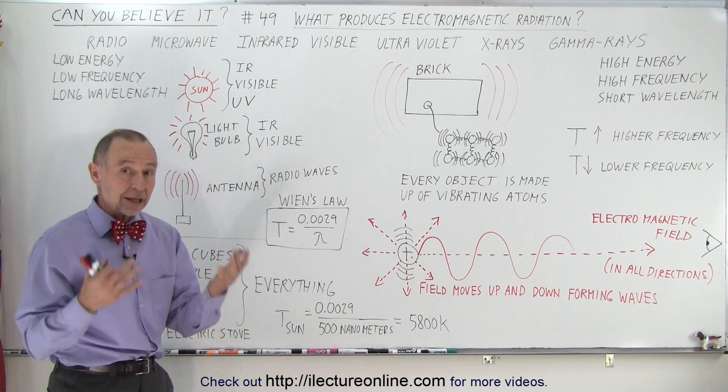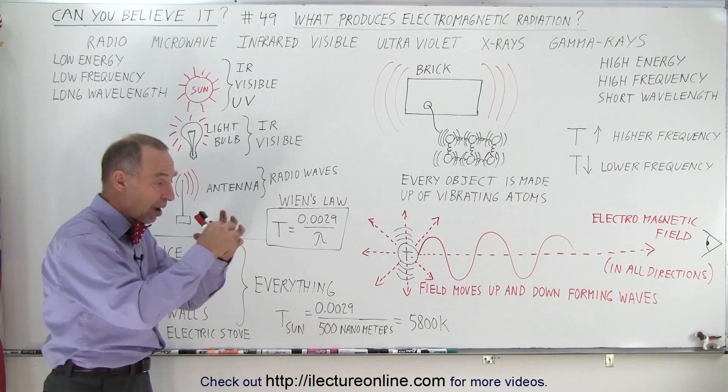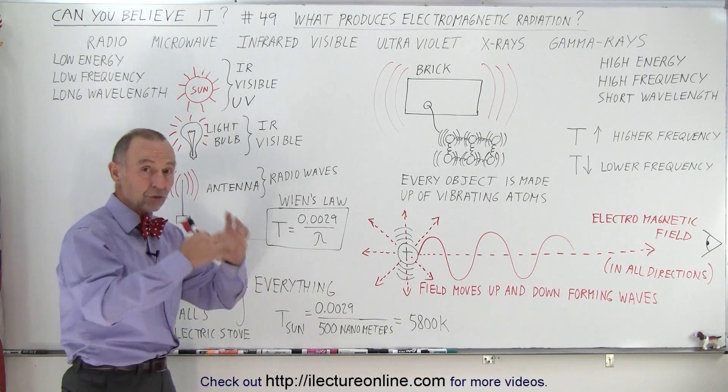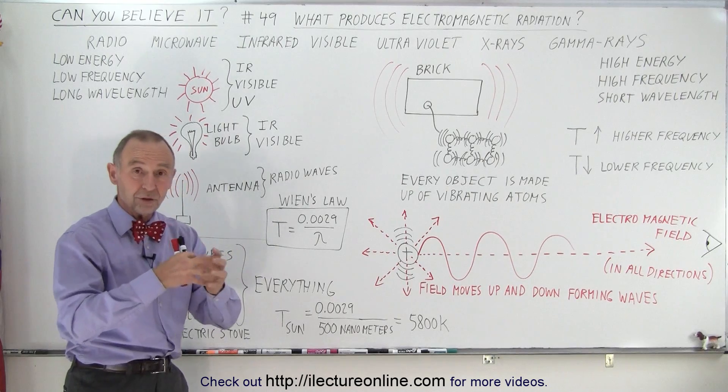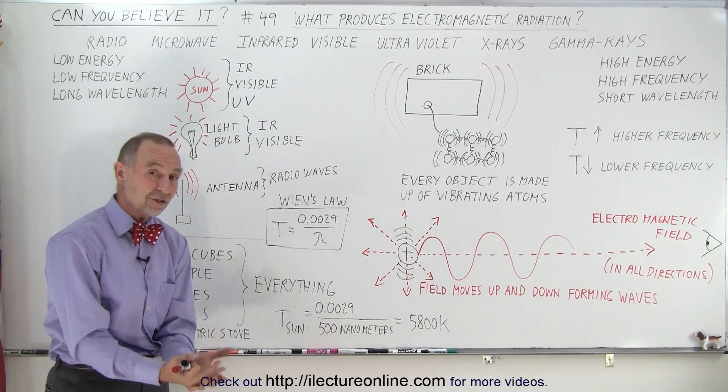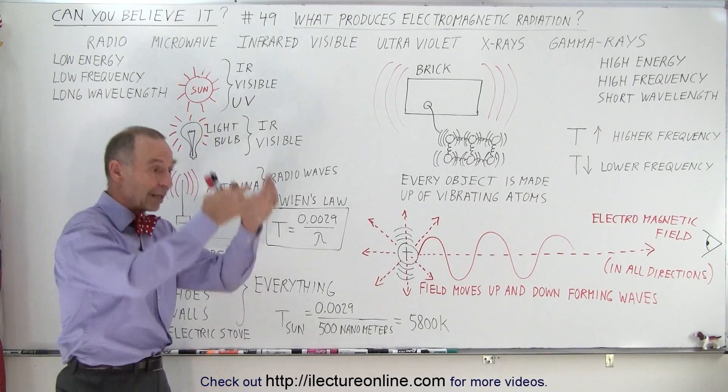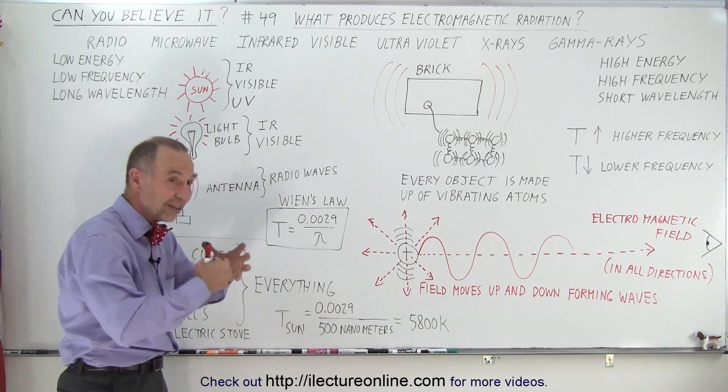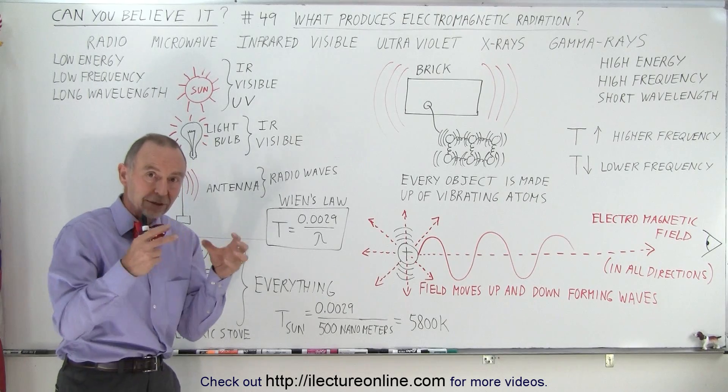So since every object is made up of atoms, and all atoms have positive nuclei, and in every object, those atoms, they vibrate, causing the nuclei to vibrate, which causes then the electric field that exists around every single atom to vibrate with the vibrating atom. And that then causes each atom to act like a little antenna.